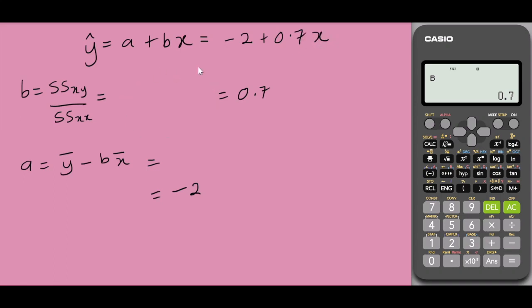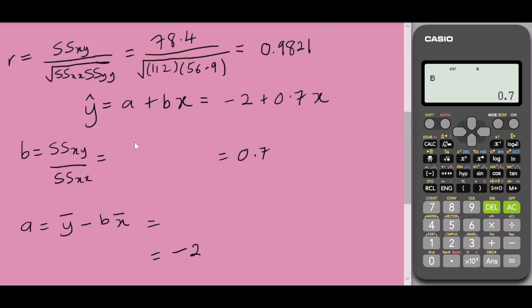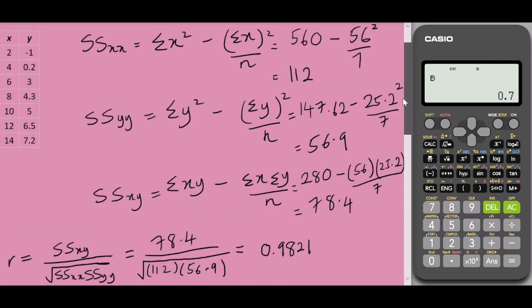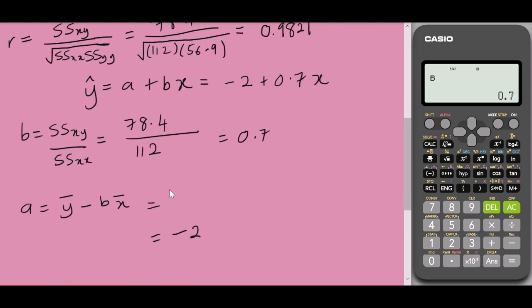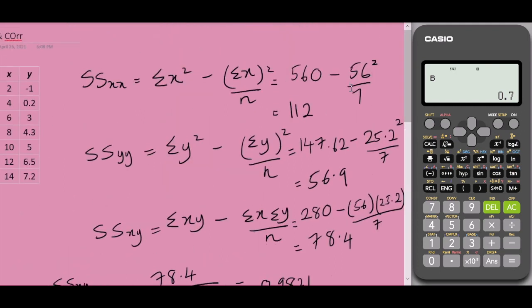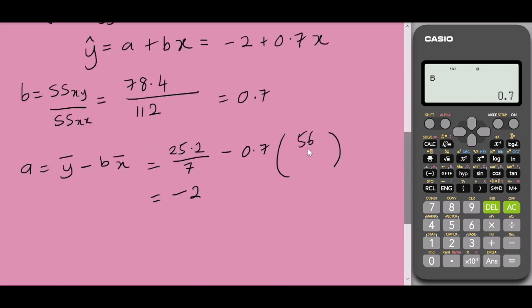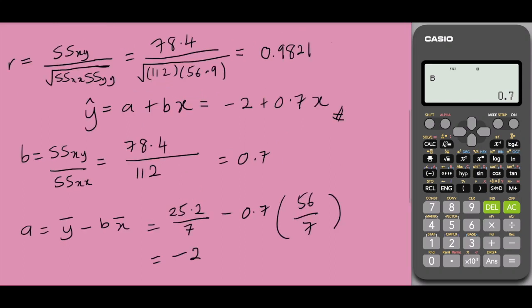We need to finish up our calculation over here. So the sum of squares of xy, 78.4 divided with 112. Y bar is simply the sum of y over n. Sum of y was 25.2, 25.2 over 7 minus 0.7. X bar would be the sum of x which is 56, so 56 over 7.